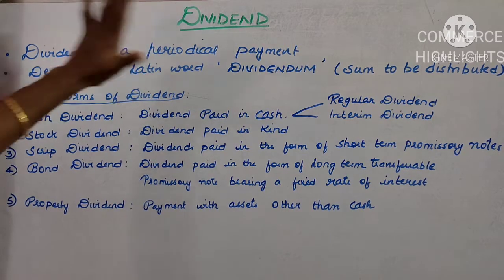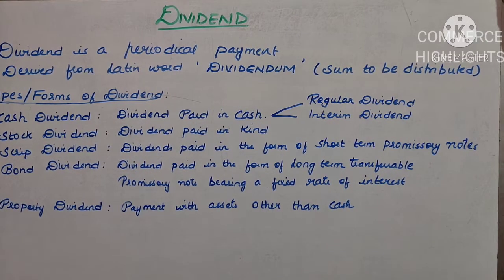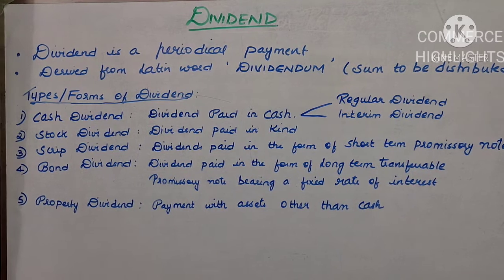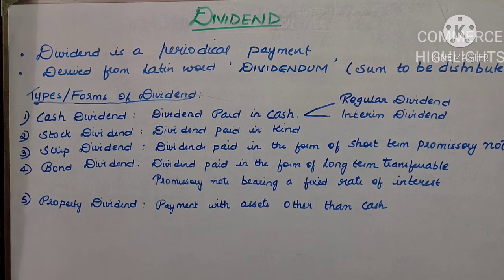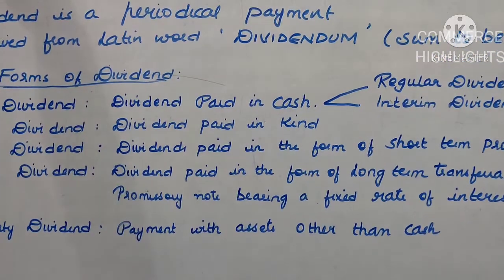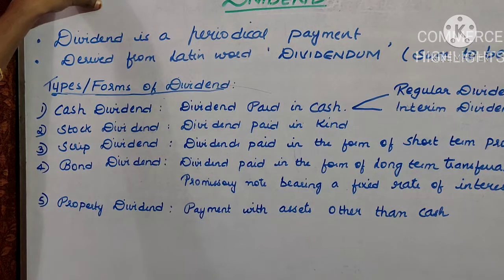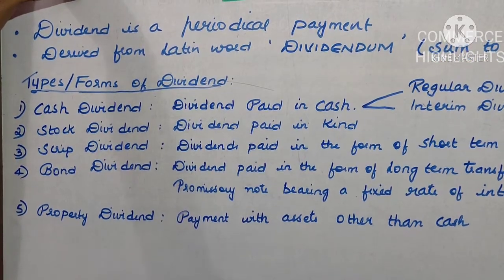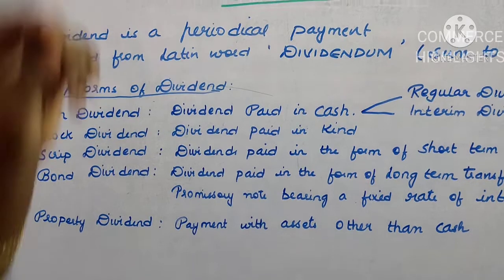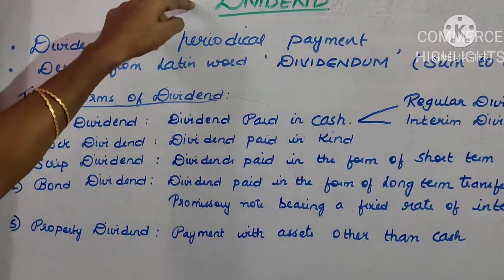Dividend is generally a share, or it is a periodical payment, or a periodical return on any investment made by a shareholder. For example, suppose I am investing rupees 1 lakh in a company and if the company declares rupees 10,000 as a return on 1 lakh, then this 10,000 is generally considered as dividend — a share on my investment.